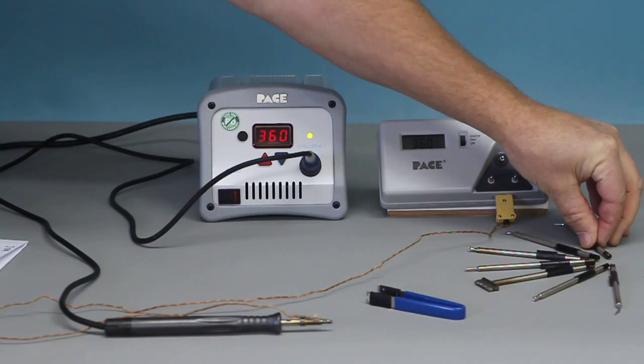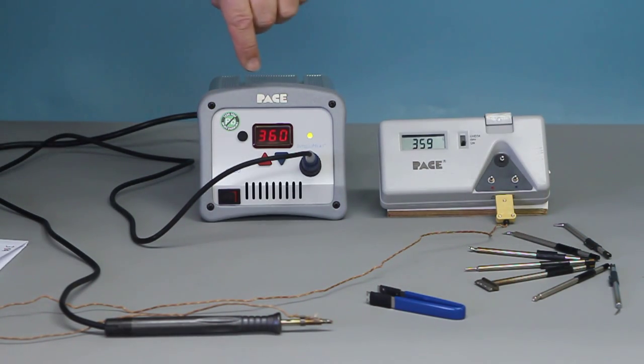You can see all the images there of what you might need. Now let's just see how close this is to sorting itself out. We're within one degree of being correct. So that's not too bad. And look how stable it is. The tip temperature is not moving. The American standard is within 15 degrees for any soldering application.